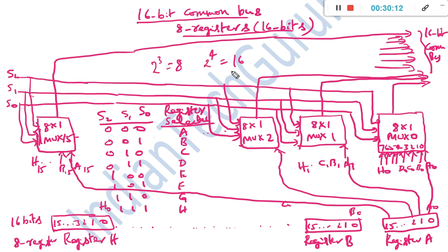The key points to remember: the number of multiplexers equals the number of bits in a register — 16-bit register needs 16 multiplexers. The type of multiplexer depends on the number of registers — 8 registers means 8-by-1 multiplexers. The number of selection lines depends on the number of registers: for 8 registers, 3 selection lines are needed because 2³ = 8; for 16 registers, 4 selection lines would be needed.